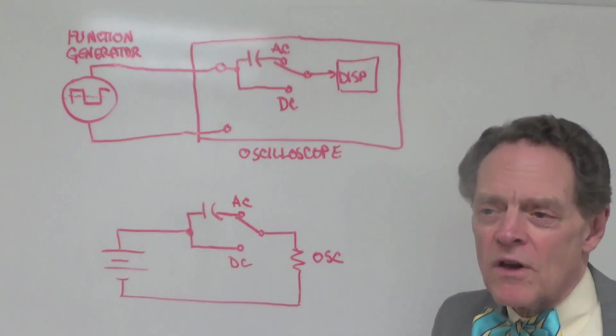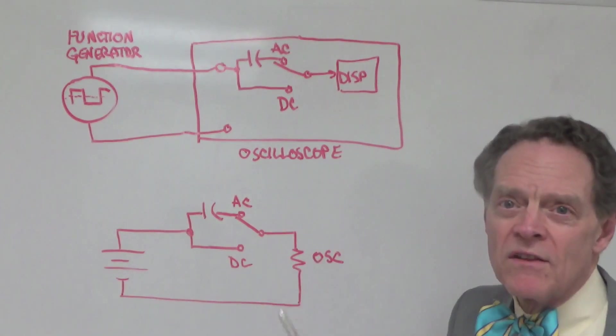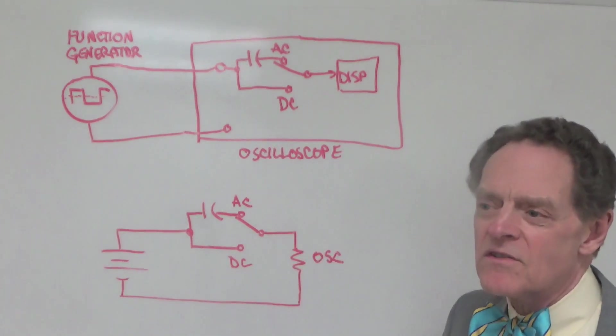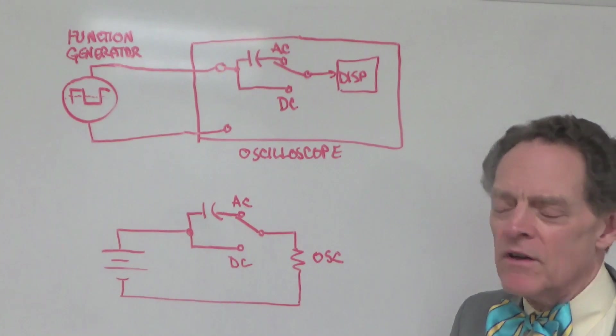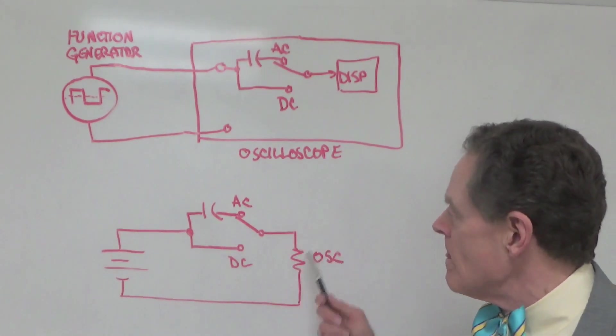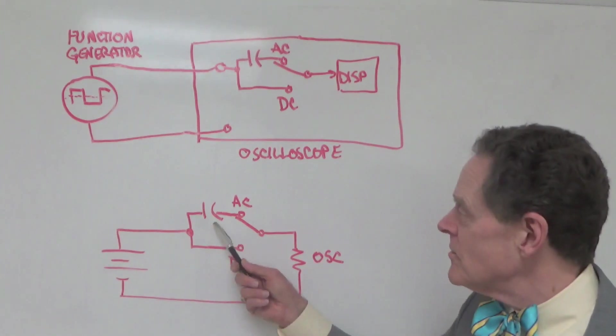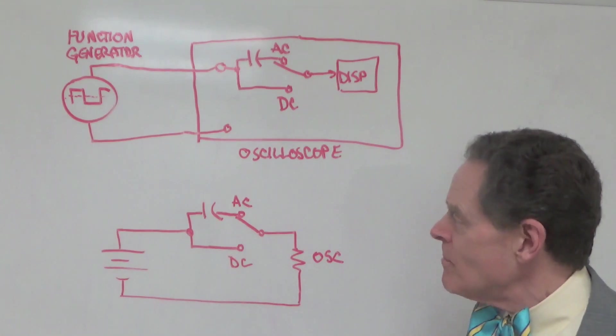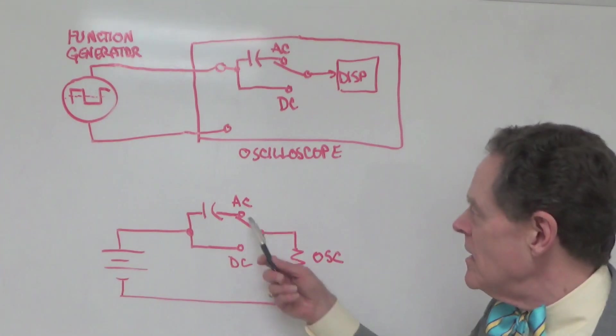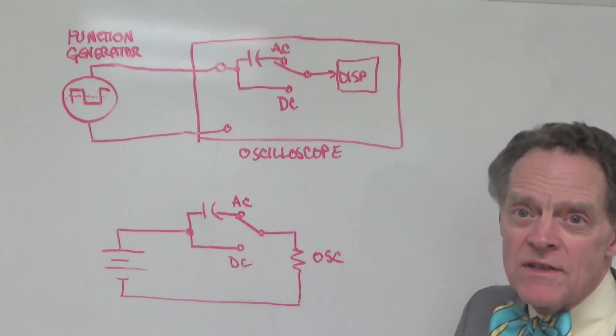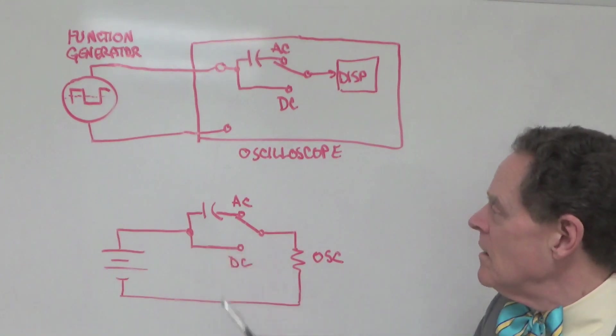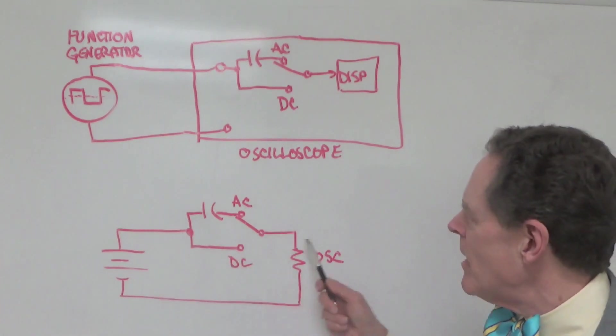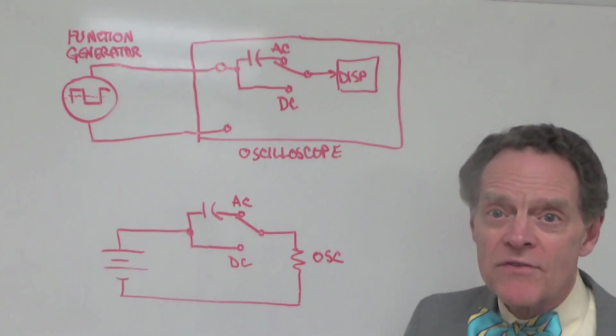And by KVL, of course, there will be no voltage across the oscilloscope itself. And I'm representing the oscilloscope here with what its internal resistance would be, which is probably on the order of 1 megaohm or maybe higher. So, there would be no voltage here because this is basically an open circuit. So, that's basically what happens when you are in the AC position.